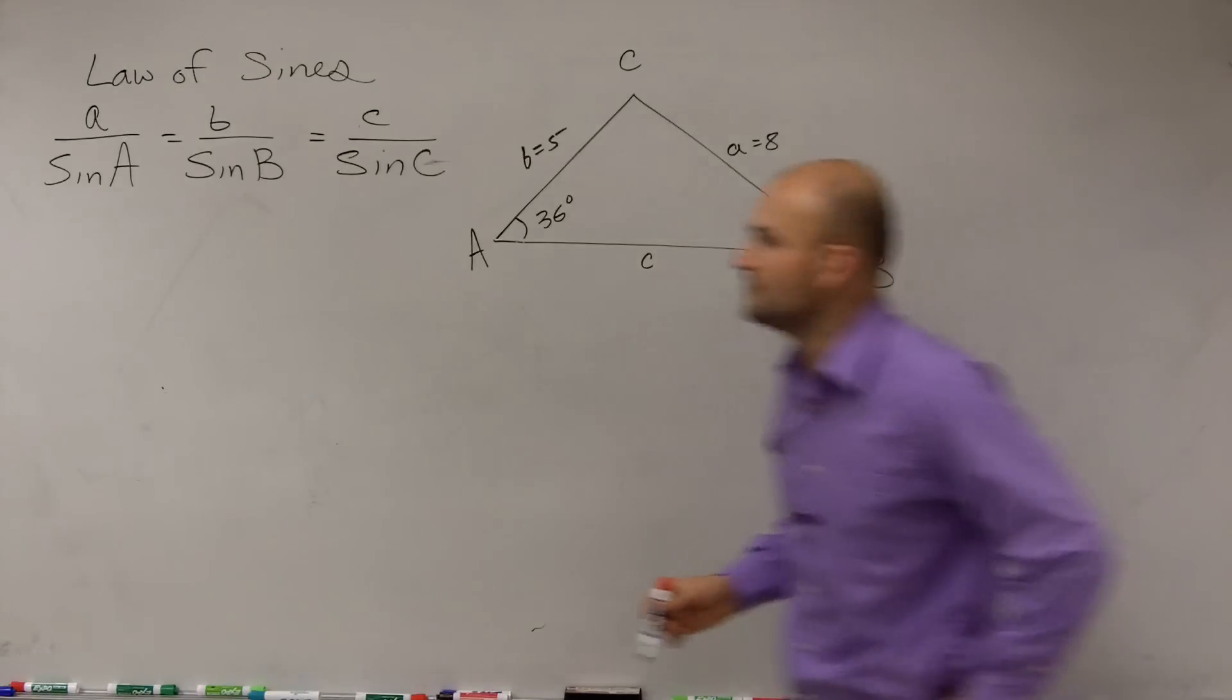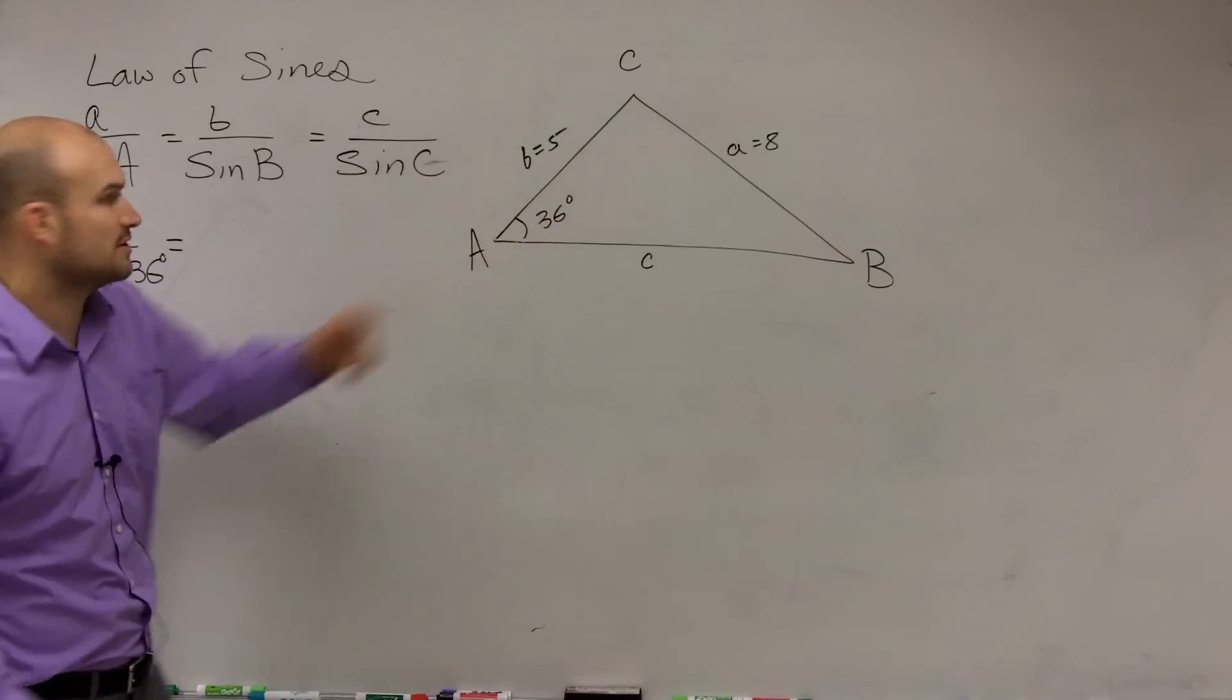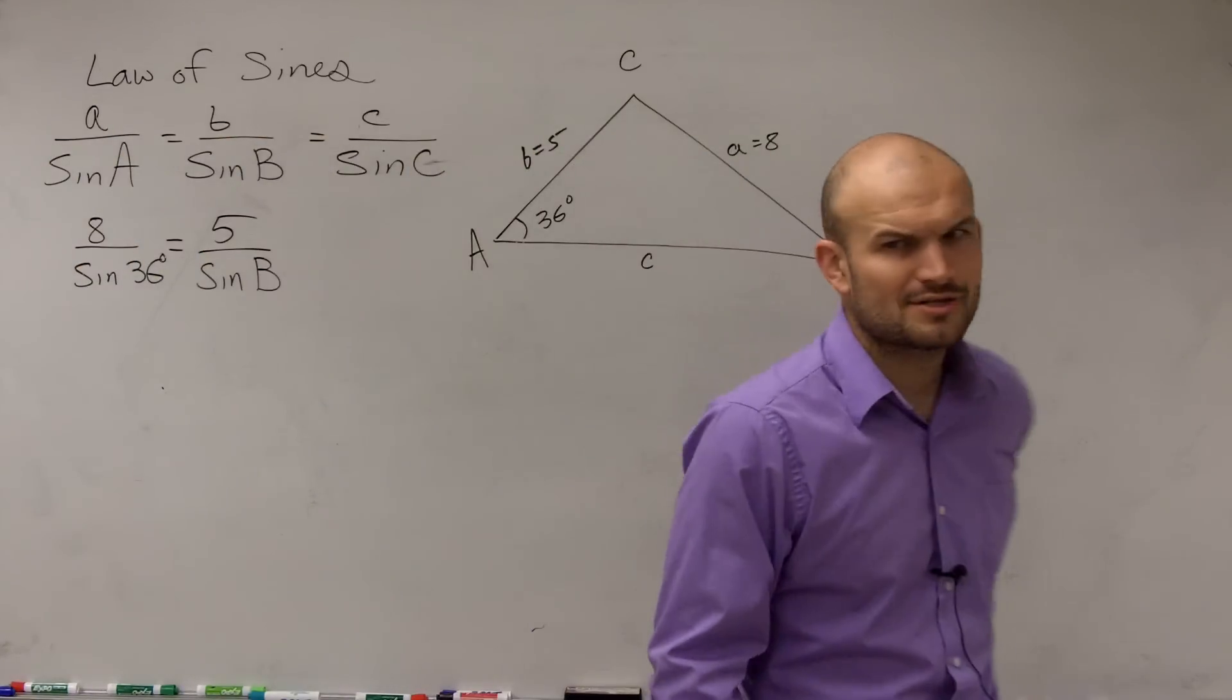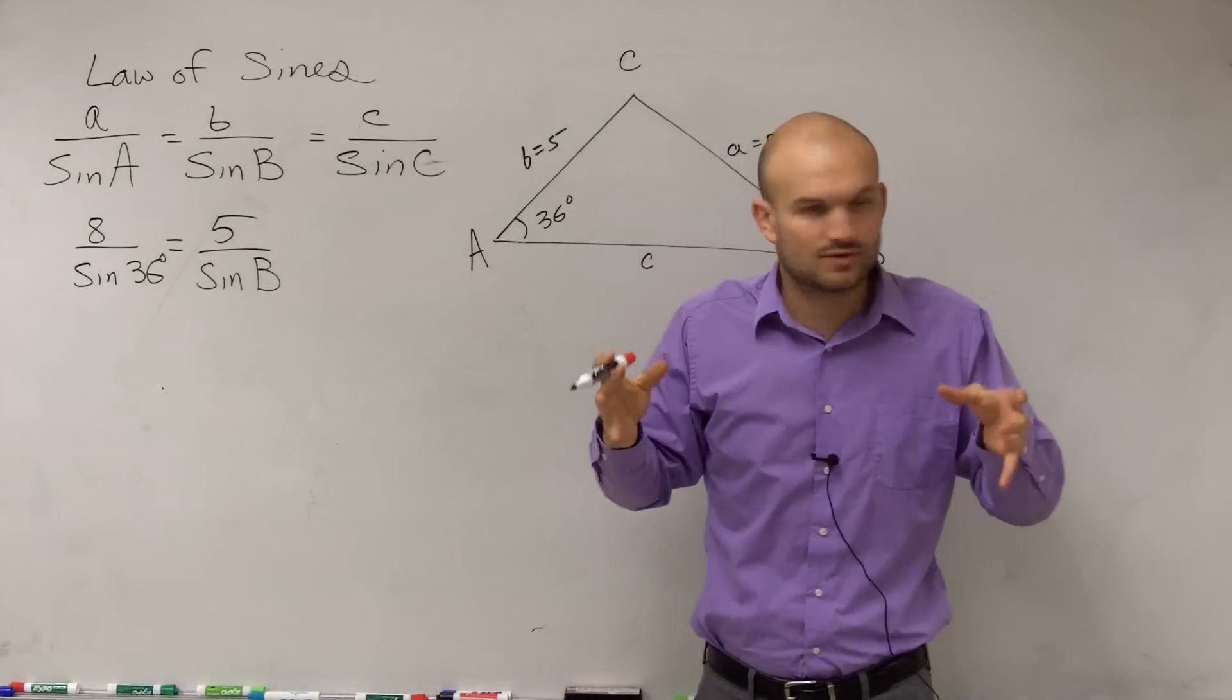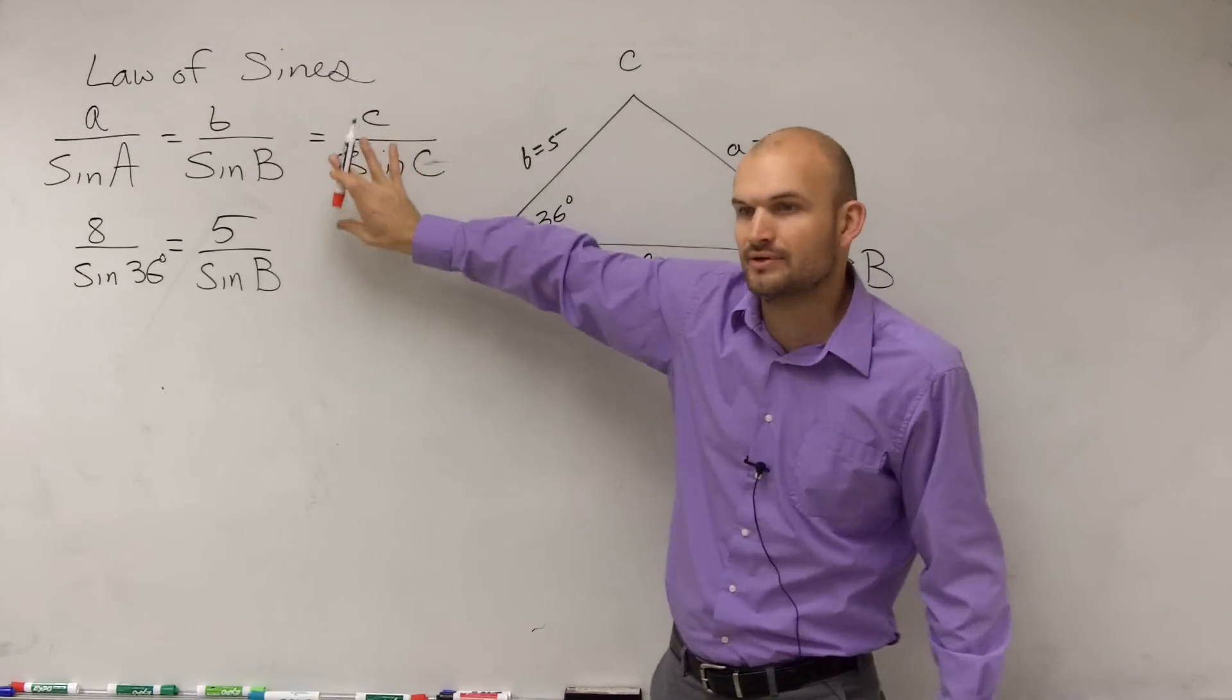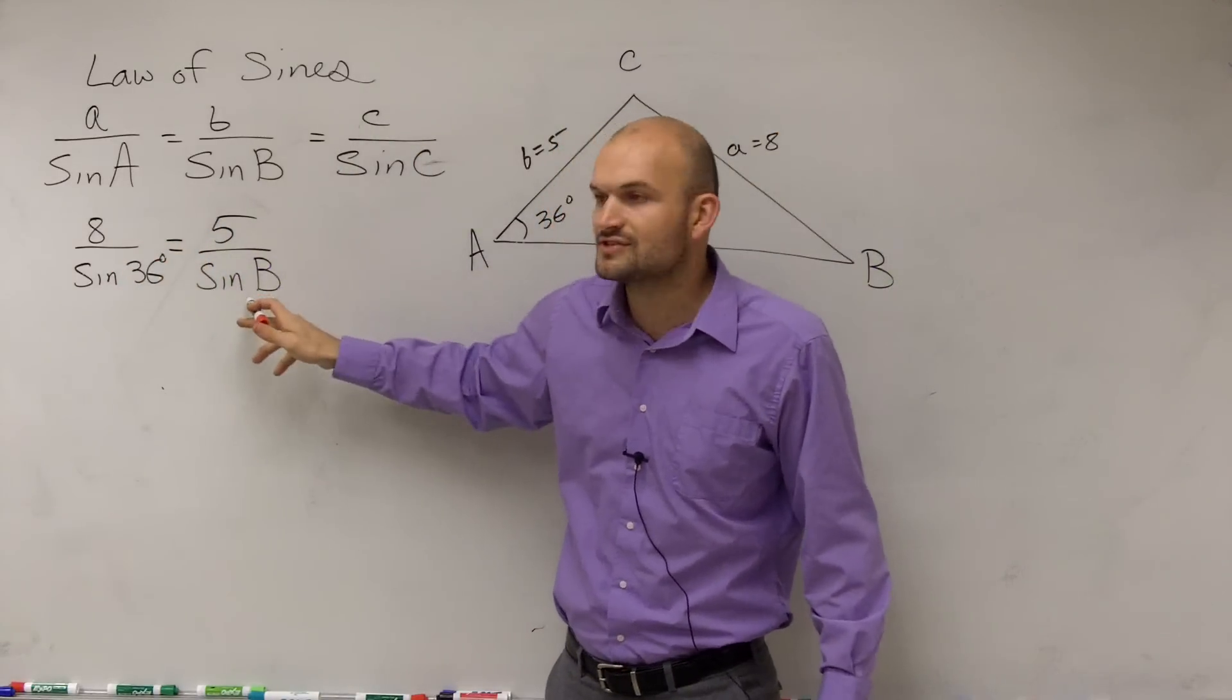So simply, let's look at this and let's just fill in what we have. We have 8 over the sine of 36 degrees is equal to—now our only other value is with B—so we could say 5 over the sine of B. Now we don't have anything with C, but we haven't really worked on how do you solve proportion with two equal signs. All it's saying is this is equal to this, which is equal to this. So any two of them that you pick are going to be equal to each other. We don't need to include the C. We'll work on how to find C here in a second. But for right now, we're just going to use this proportion to help us solve for the sine of B.